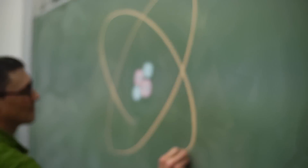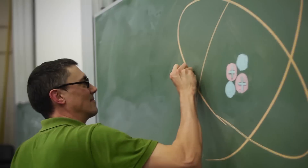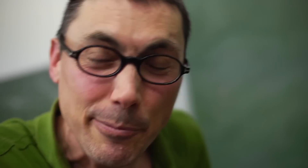Now, all of you out there know what an atom looks like, right? It looks like this. No, I'm wrong! That's called the Bohr-Sommerfeld atom. That's what an atom looked like back in the 1920s. And ever since the introduction of quantum mechanics towards the end of the 20s, that's been obsolete.